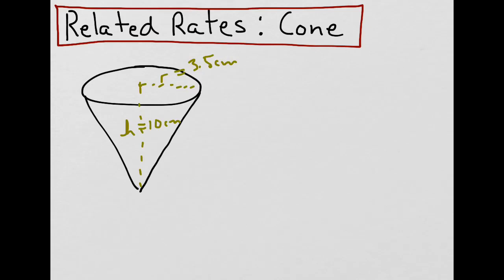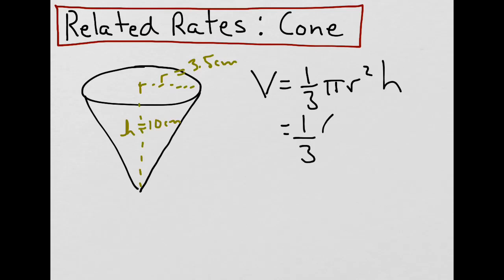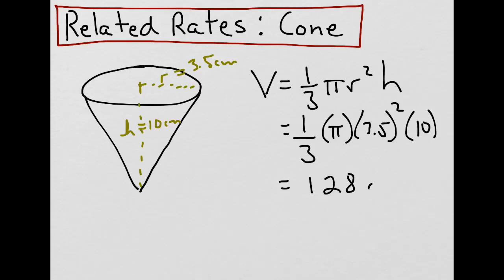We could then use the formula for the volume of a cone, which is 1/3 π r² h, and plug in our values to determine its capacity. So when we do that, we'll put in π times 3.5 squared times 10, and when you figure that out, it's about 128 cm³.